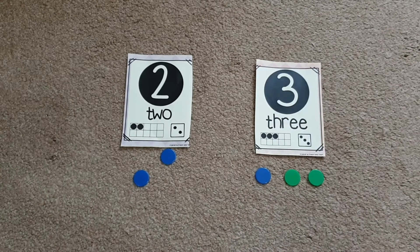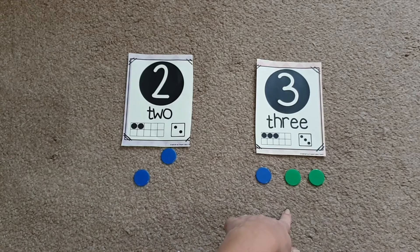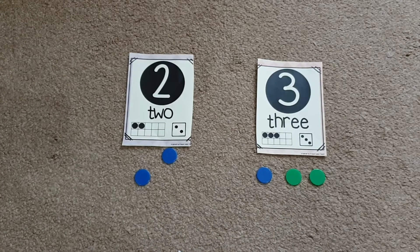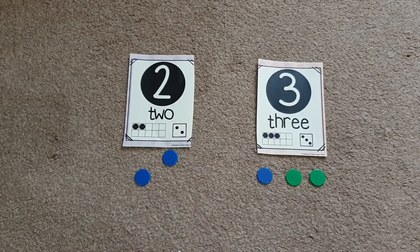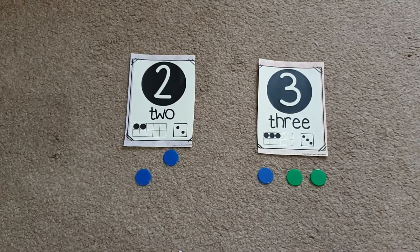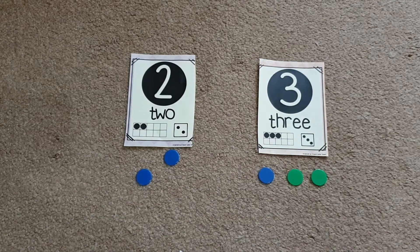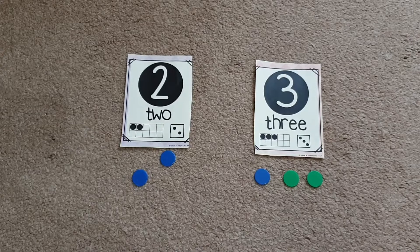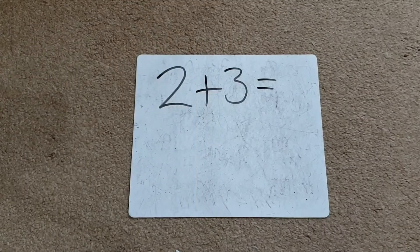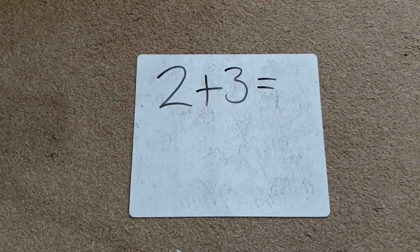Then they can tell you that they have five all together, so two add three equals five. Now the flashcards I've got here are ones that I've made and they're available in my TPT store, so I'll leave the link down below. However, you could always just use bits of card at home, bits of paper — just cut out little bits of card and write your own numbers on it. It doesn't need to be anything fancy.